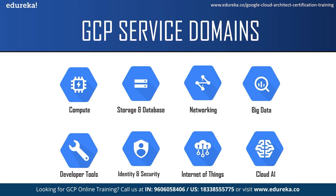Google also provides a free trial to all its new customers. It provides $300 in free credit to fully explore and conduct an assessment of Google Cloud Platform. You can use this $300 to try various Google Cloud products and learn how to use them. You won't be charged until you choose to upgrade, and it is valid for 90 days. GCP also has a free tier in which all Google Cloud customers can use selected products like Compute Engine, Cloud Storage, and BigQuery free of charge within the specified monthly usage limits.